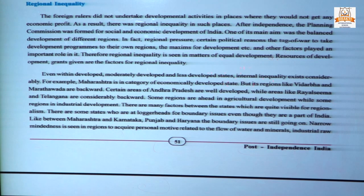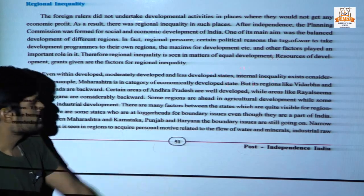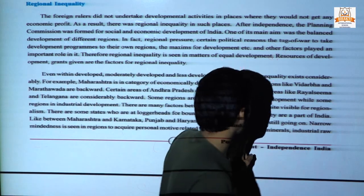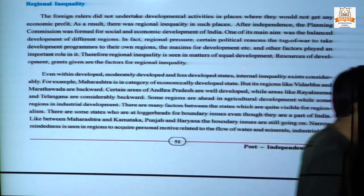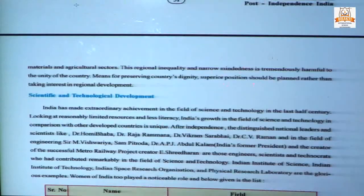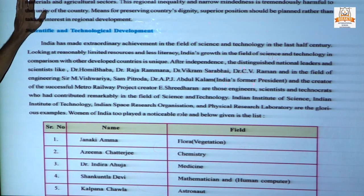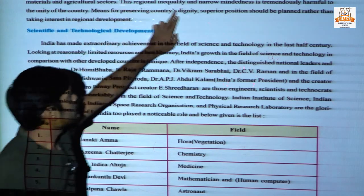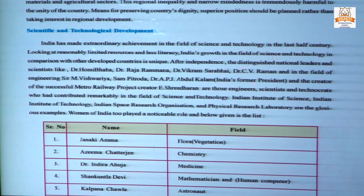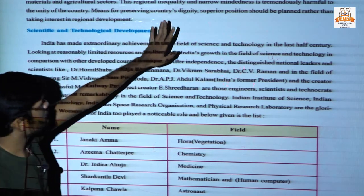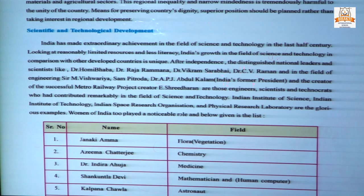There are also some boundary problems and river water issues. Like Maharashtra-Karnataka and Punjab-Haryana boundary issues are still there. Narrow-mindedness can be seen among politicians because of this flow of water. River water problems, minerals, industrial raw materials, and the agriculture sector are all related issues. This regional inequality and narrow-mindedness is harmful to the unity of the country — we have to preserve the dignity and superior position for economic development.